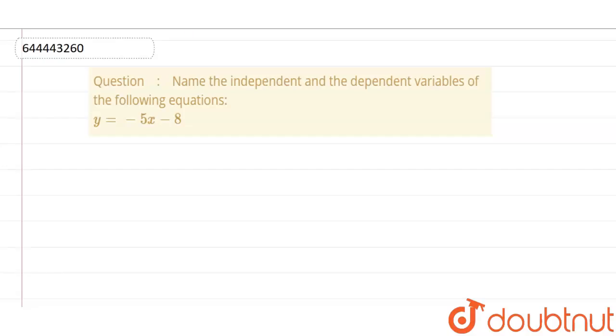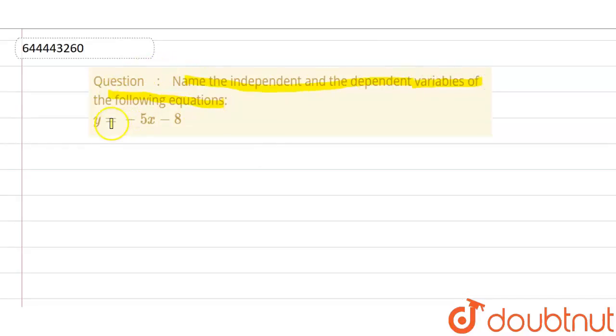The question given to us is: name the independent and the dependent variables of the following equation. We have to name the independent and dependent variable of the equation, and the equation is y = -5x - 8.